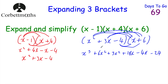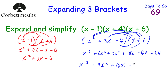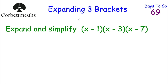Now we collect like terms. The x cubed term is just x cubed. For x squared terms: 6x squared plus 3x squared gives 9x squared. For the x terms: 18x minus 4x gives plus 14x. And our constant is minus 24. So the final answer is x³ + 9x² + 14x − 24.